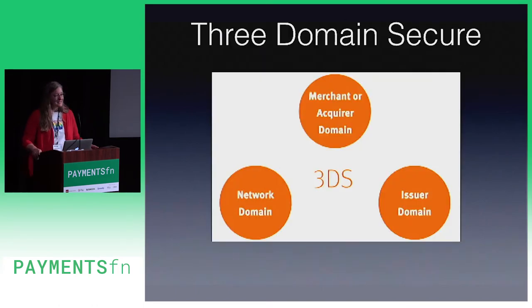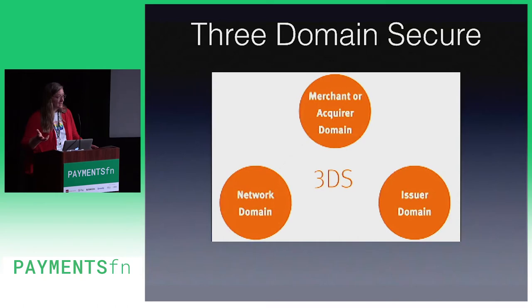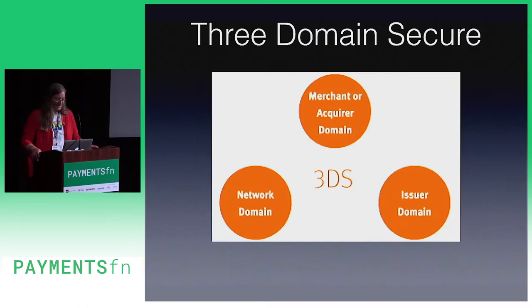3DS stands for Three Domain Secure. The merchant domain represents the merchant from which a purchase is being made as well as their bank. The issuer domain covers the bank that issued the card used for the transaction. And the network or interoperability domain represents the payment infrastructure, usually managed by MasterCard, Visa, etc.